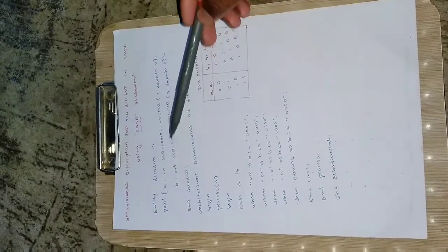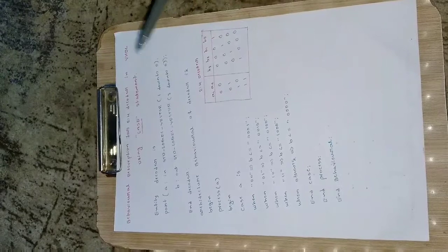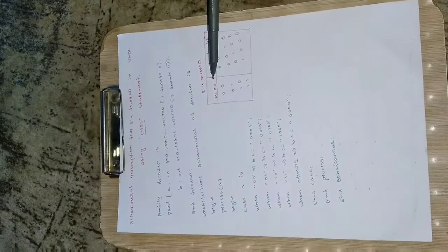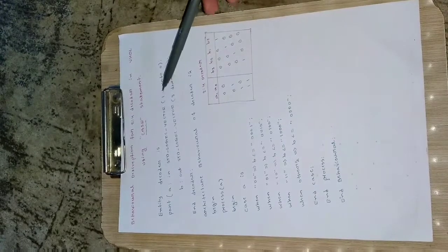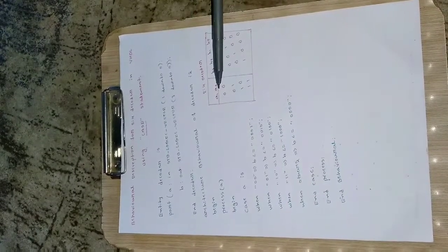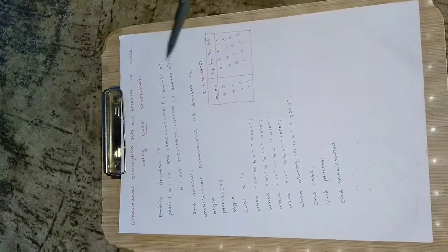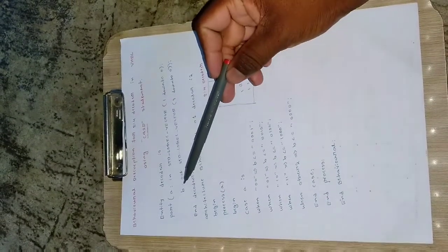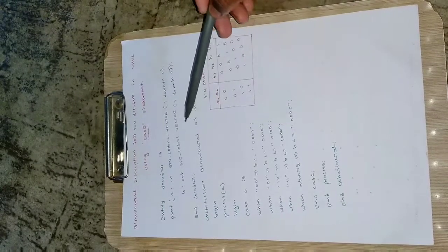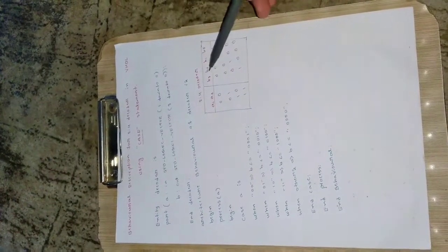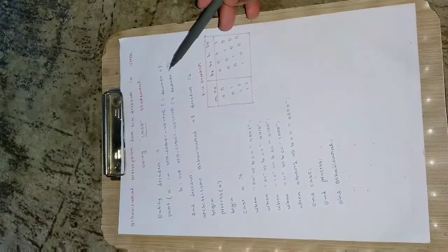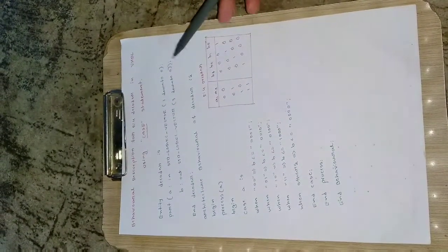Then define the input and output ports here. So port A in standard logic vector 1 down to 0. I have A1 and A0 so I will be defining it in terms of the vector. So A of 1 and A of 0 are the 2 variables which are provided with this line. Then B is also defined with a vector format, that is B colon out standard logic vector 3 down to 0. This will give B of 3, B of 2, B of 1 and B of 0. Then close this port bracket and put a semicolon.